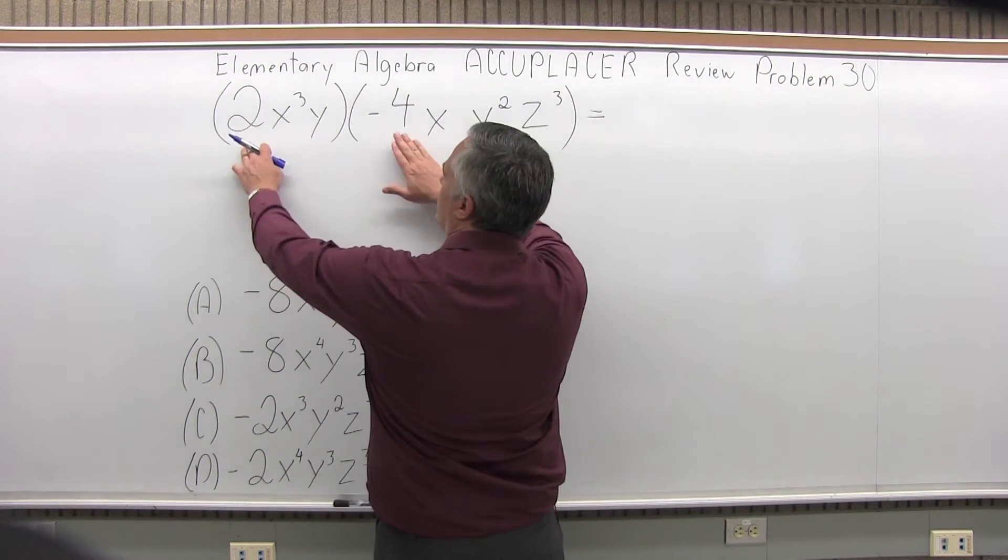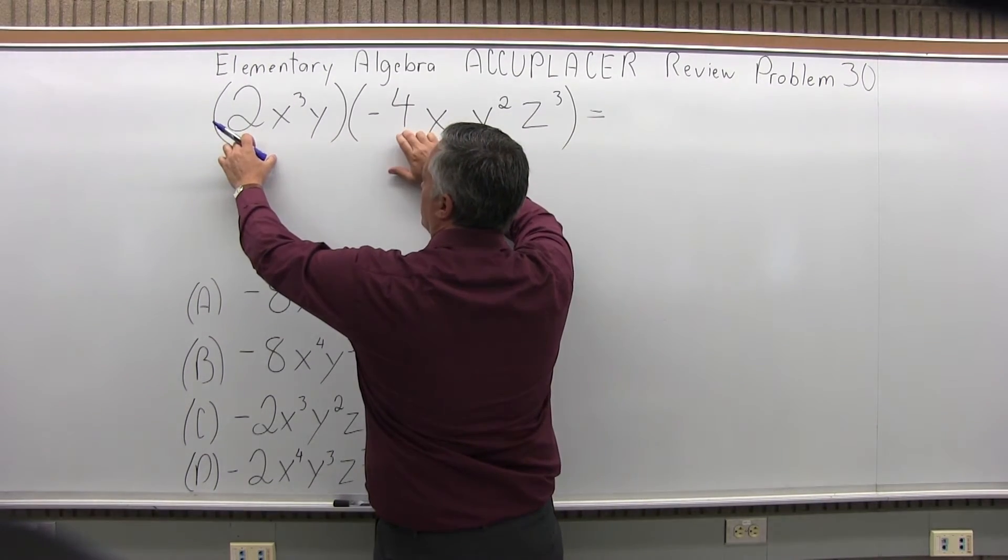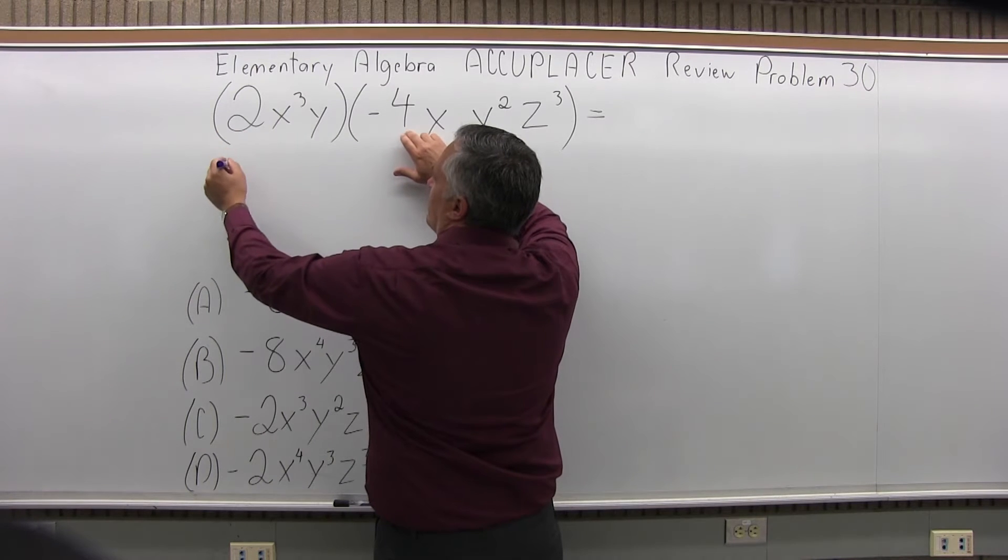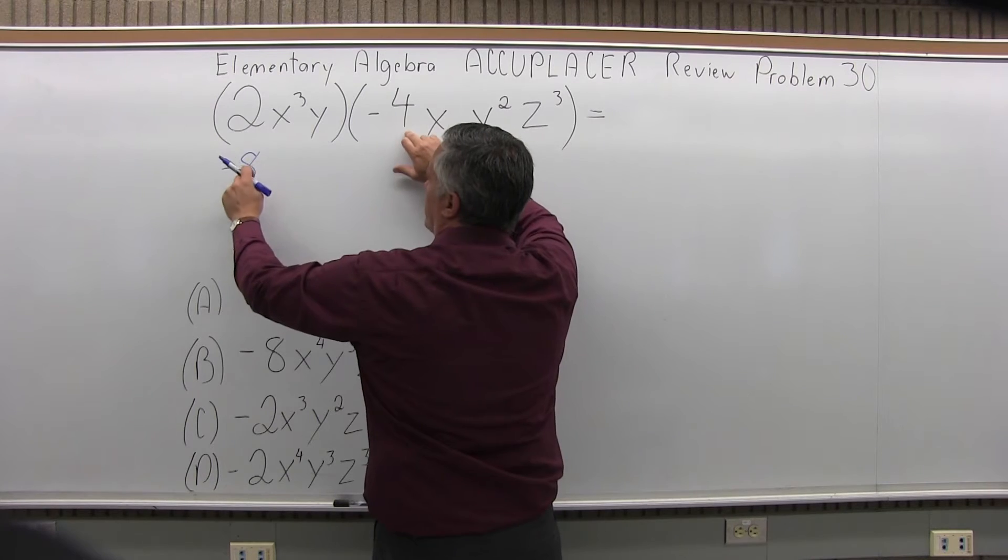Initially I'm just going to look at the number times the number, forget all the other variables. So I'm just going to get negative 4 times 2, so it's negative 8. You have to pay attention to the sign: positive 2 times negative 4 is negative 8.